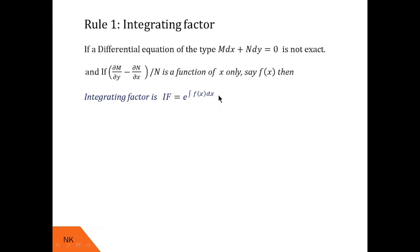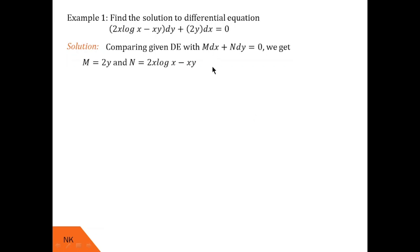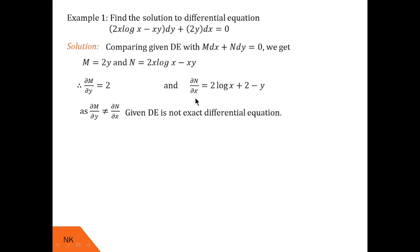Let me illustrate this with an example. The differential equation is (2x log x minus xy) dy plus 2y dx = 0. First, we check whether it is exact by comparing with M dx plus N dy = 0. We identify M = 2y and N = 2x log x minus xy. Computing ∂M/∂y gives 2. Using the product rule, ∂N/∂x = 2 log x + 2 minus y. Since ∂M/∂y ≠ ∂N/∂x, the given differential equation is not exact.